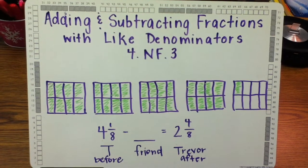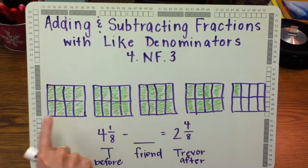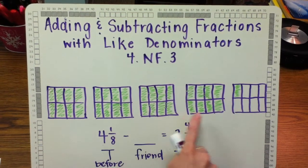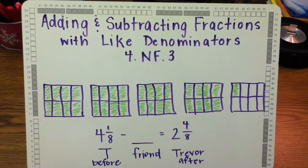Trevor had four and one-eighth pieces to start. I've already drawn that and shaded it in. You can see the one, two, three, four, and one-eighth that Trevor had.